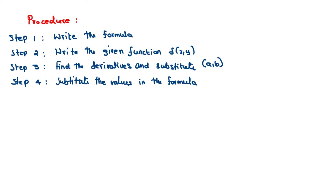Procedure: to find the Taylor series for any function at any point, first write the formula — that is the first step. Then write the given function f(x,y), then find the derivatives and substitute the point (a,b). Then step 4, the final step, substitute the values in the formula.